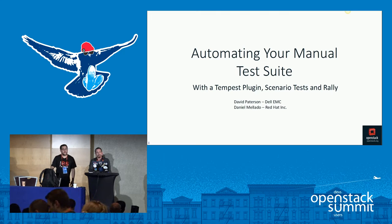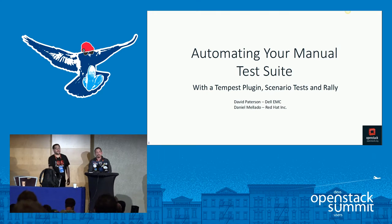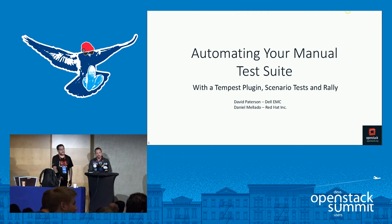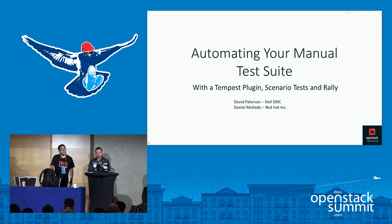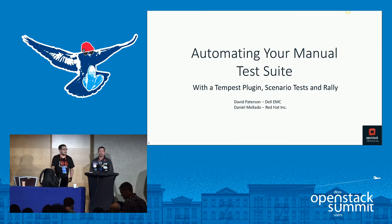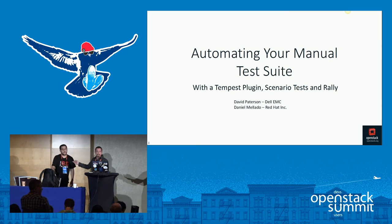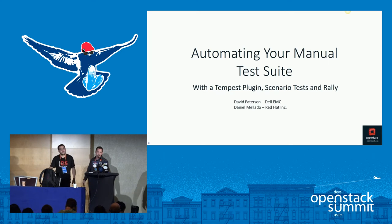This whole thing came about because we have a lot of legacy tests that are completely manual right now. I started talking to the QA guys about a month ago, trying to find a way that we can move away from this manual testing and toward automating it. That's where I made this prototype using Tempest, the scenario tests, and Rally. It was quite easy to do, actually. Also presenting with me is Daniel Mulatto from Red Hat. I'm a senior software engineer with Dell.